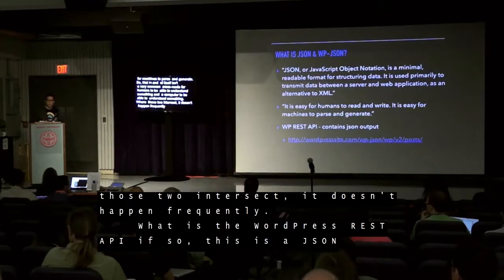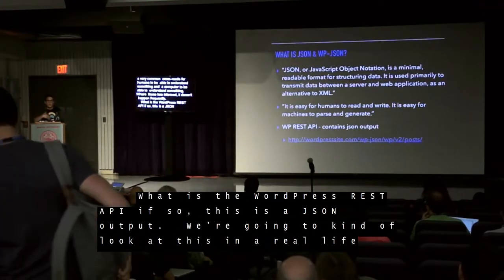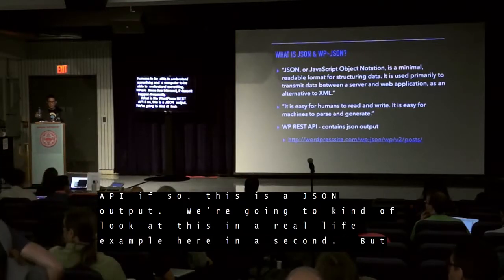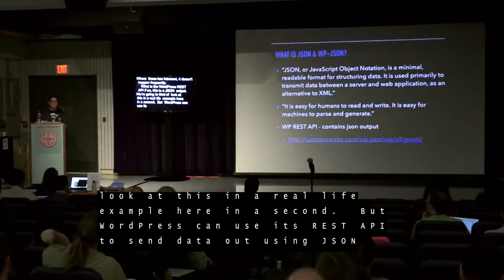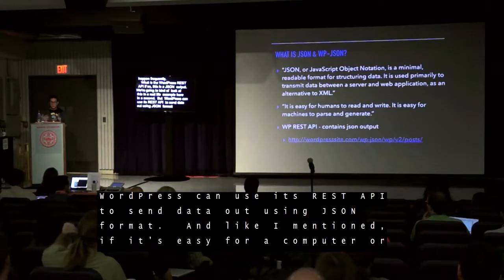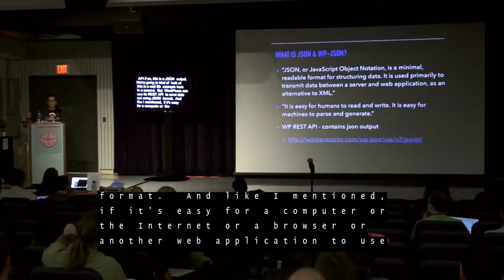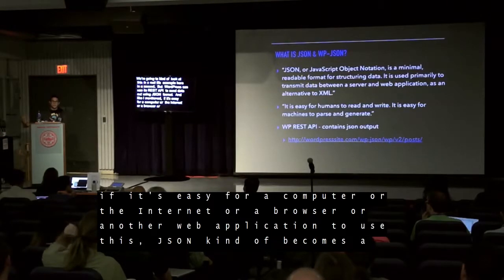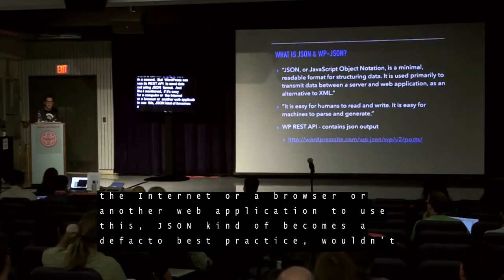What is the WordPress REST API? This is a JSON output. WordPress can use its REST API to send data out using JSON format. And like we mentioned, if it's easy for a computer, a browser, or another web application to use this, JSON kind of becomes a de facto best practice.